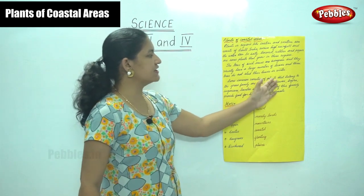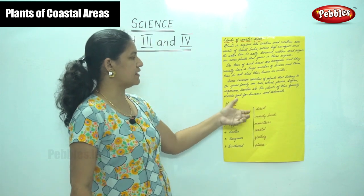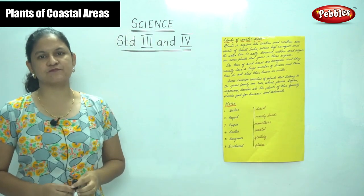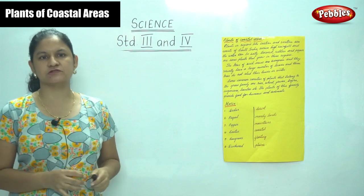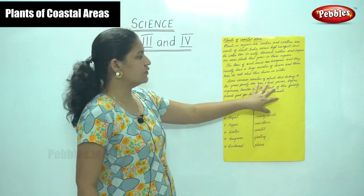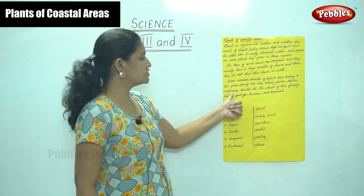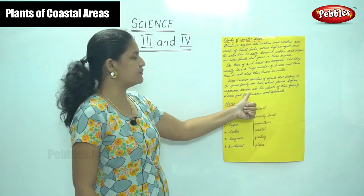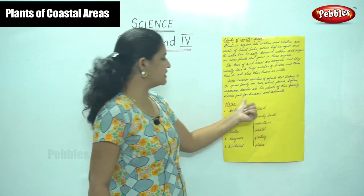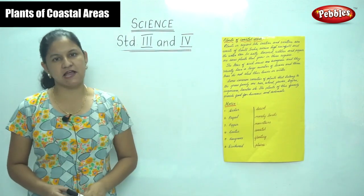Some common varieties of plants that belong to the grass family are: rice, wheat, jowar, bajra, sugarcane, bamboo, etc. The plants of this family provide food for humans and animals.